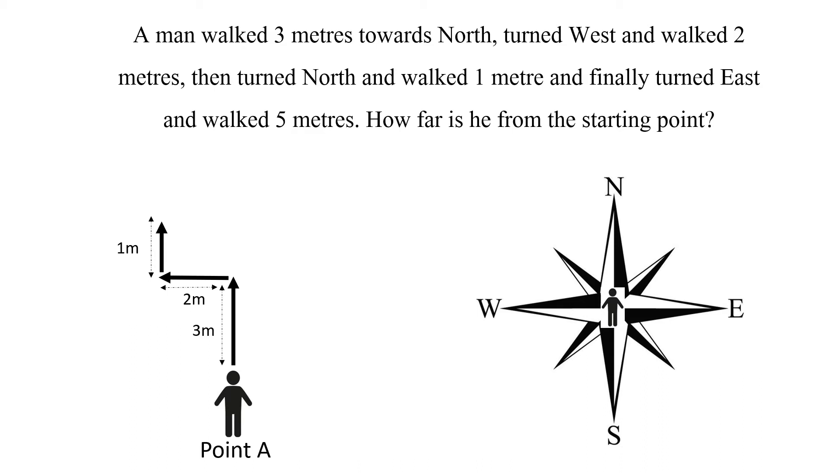Walk 1 meter. You then turn east, that is to your right, and walk 5 meters, so the distance that you need to calculate is from point A to point B.